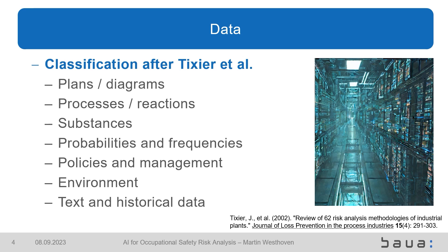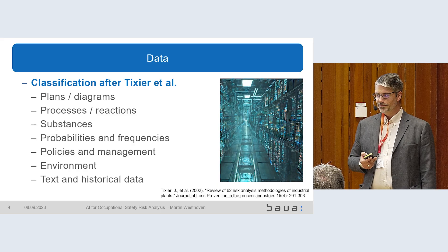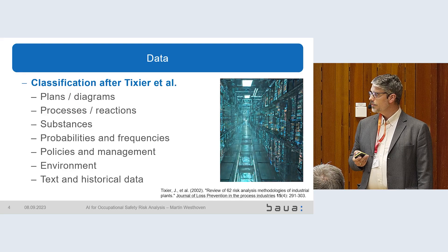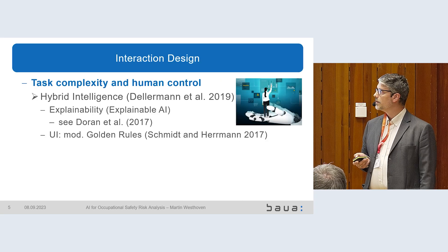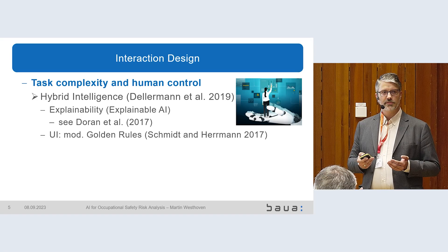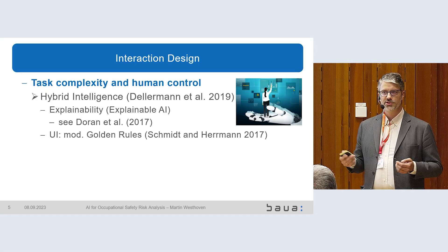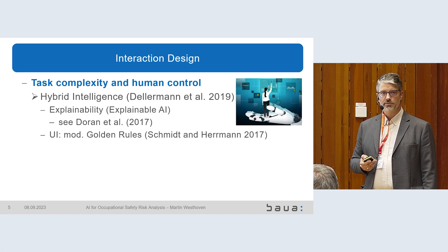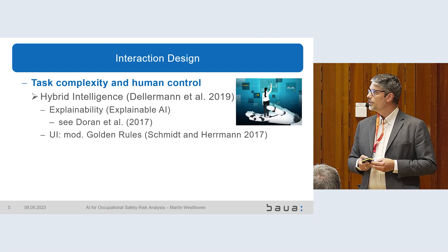There are different types of data we can draw upon. We have plans and diagrams, processes, process data, and process diagrams. We know of the substances involved with workplaces as probabilities and frequencies and so on. The last point is text and historical data, which is actually the largest part of hazard assessment — it's just text, more or less structured, more or less digitalized. All the other types of data are not really included in hazard assessments.